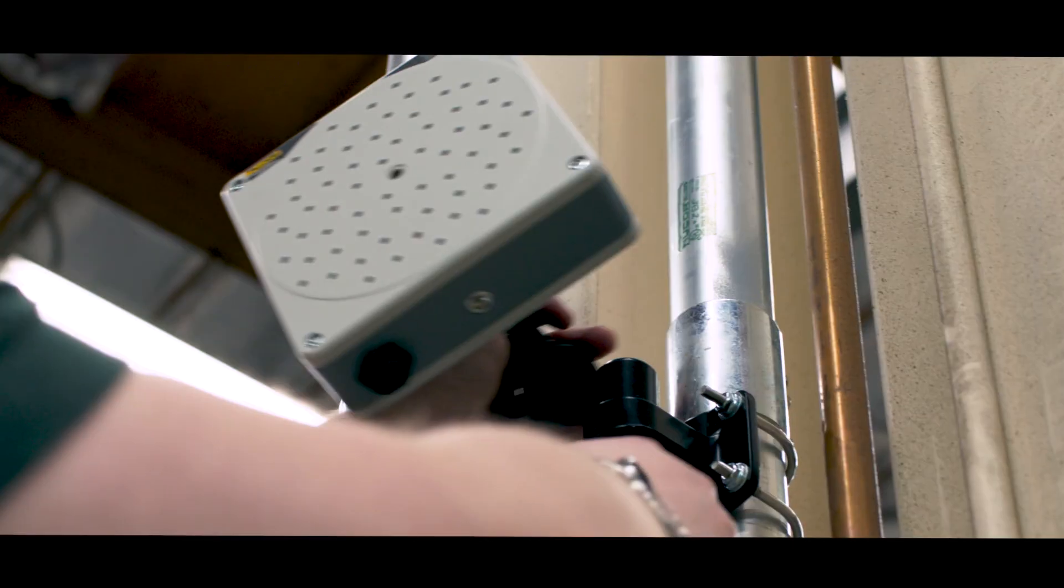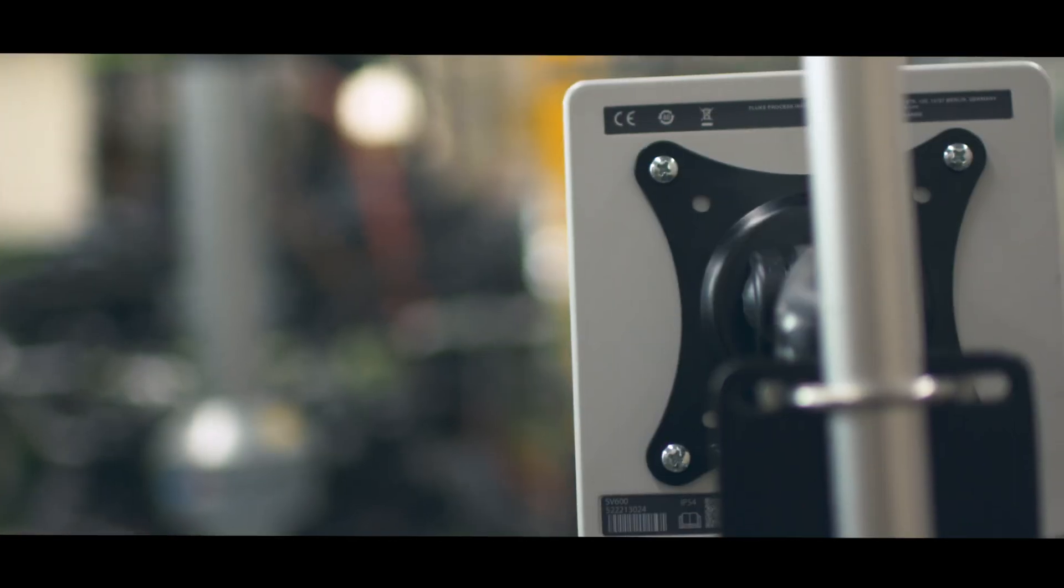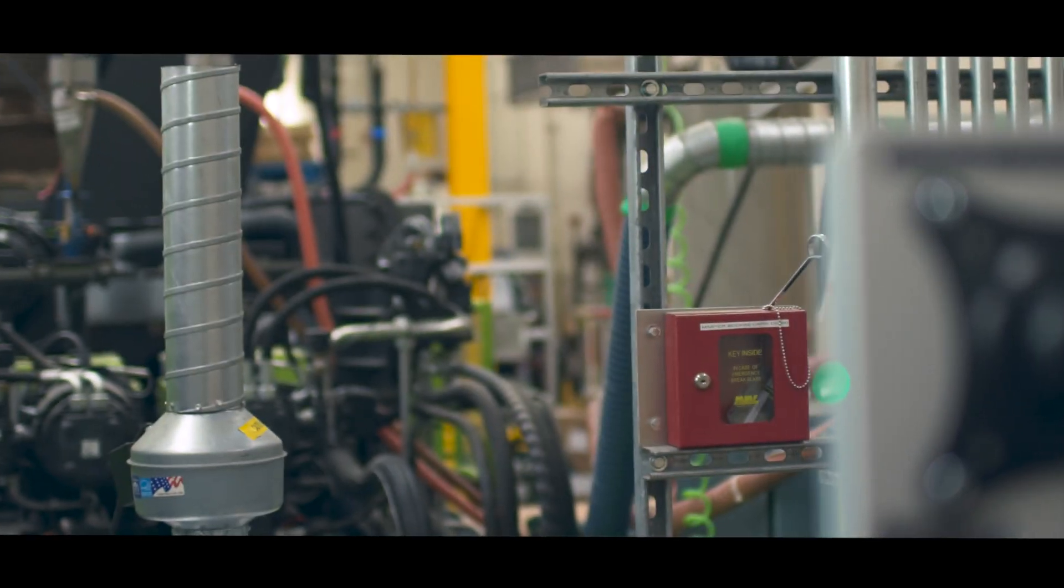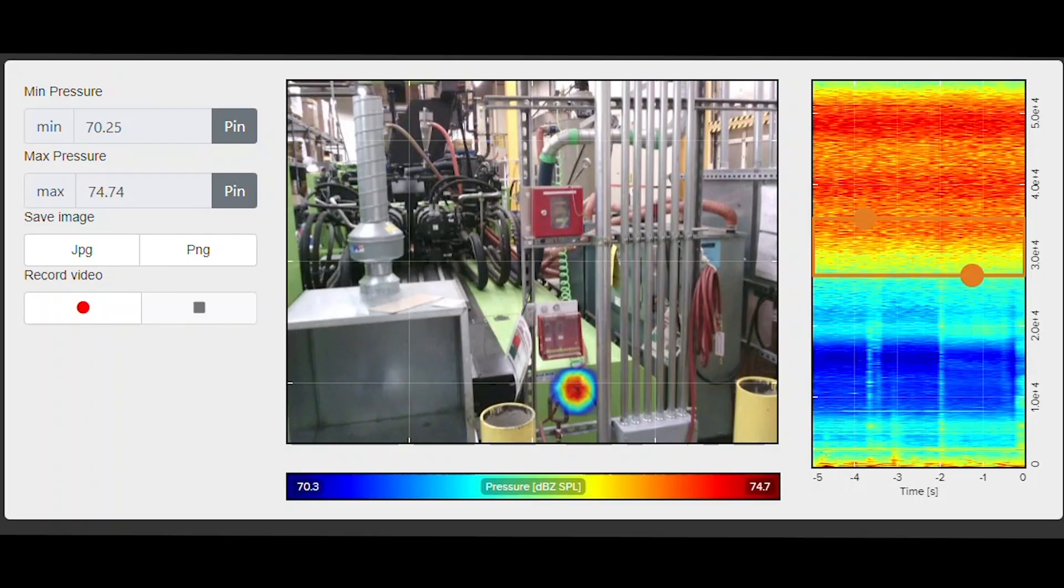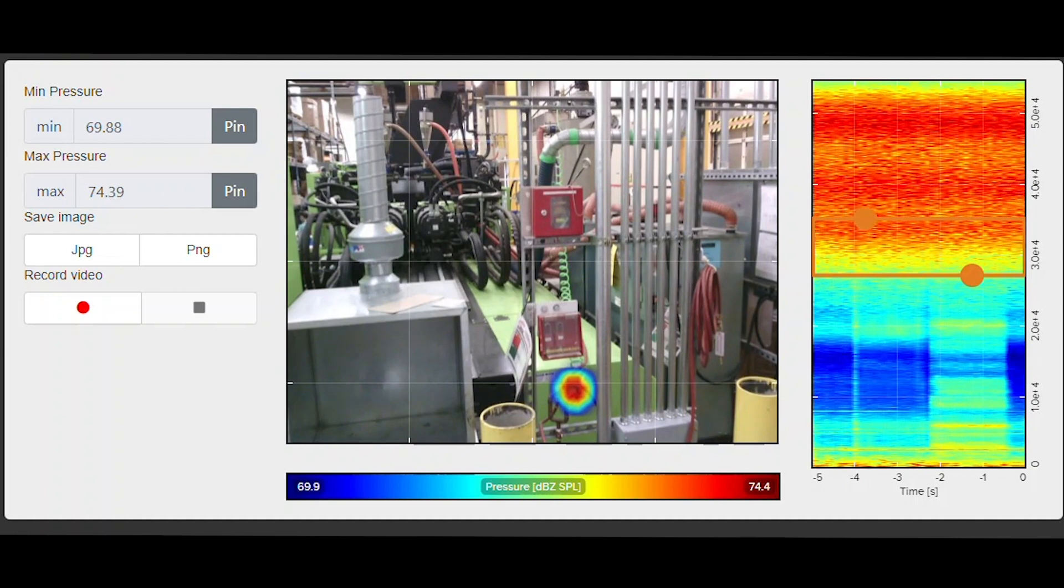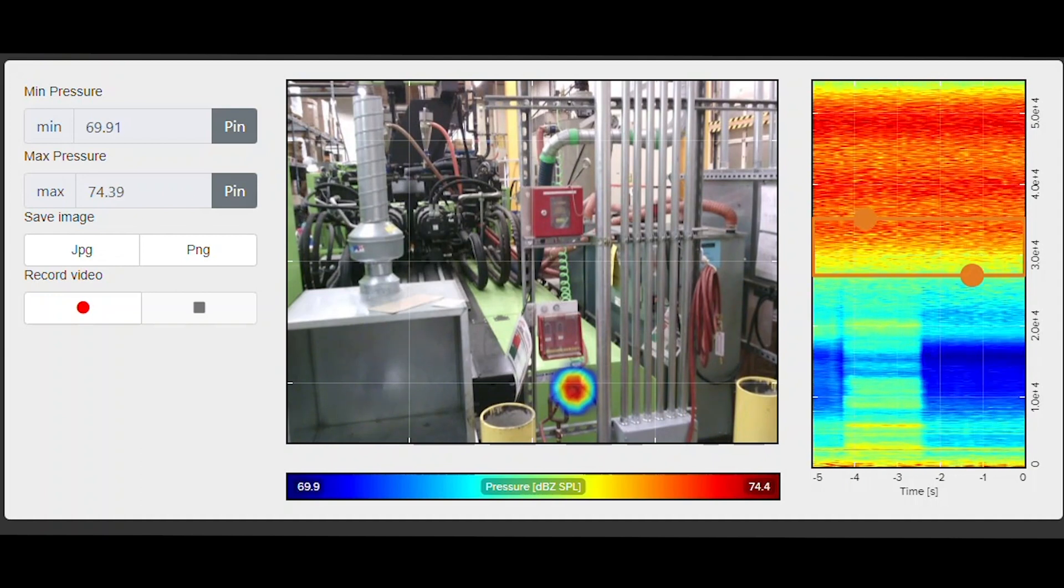Place them wherever you need continuous monitoring to automate your process. Monitor remotely, set user-defined alarms and even automate by integrating the SV600 into your program logic control systems.